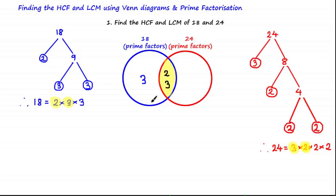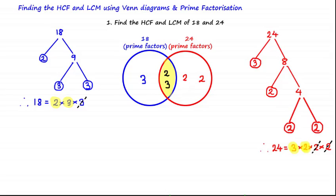Once we've written out the remaining parts of the Venn diagram, it's useful to cross out the 3 we've placed. Lastly, we have a remaining pair of 2s which are prime factors of 24 but not 18, so they go on the right side of the Venn diagram. The Venn diagram is now complete.